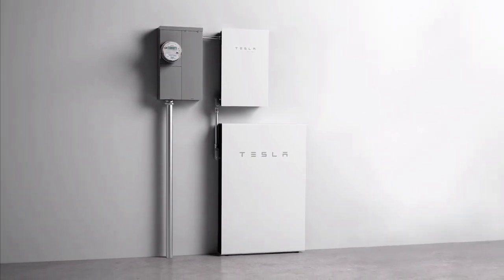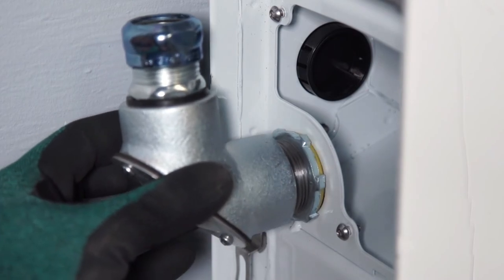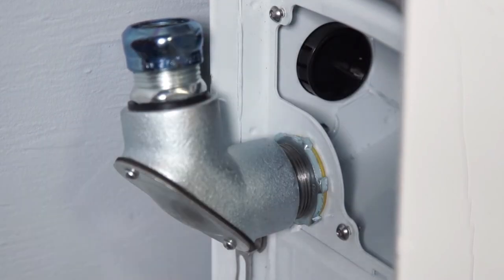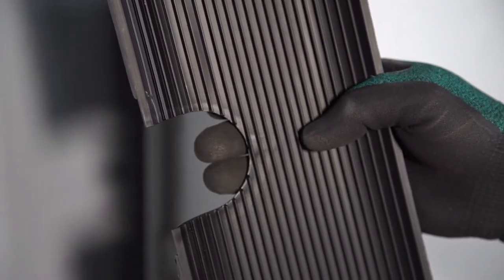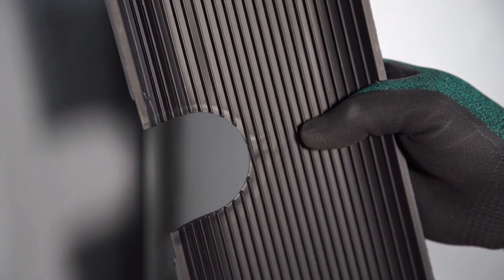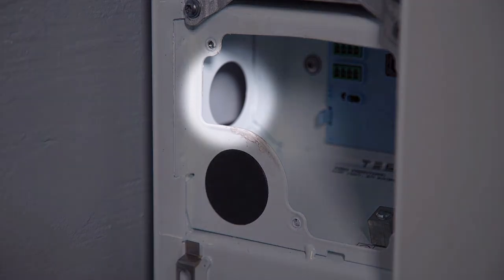When preparing for the installation, take your time to plan out a short and efficient conduit run. A typical installation uses one-inch conduit with a conduit body connected to the inlet on the left side of Powerwall 2. If the conduit run will enter the unit from the side, slide the conduit entry door out of the slot in the cover to remove it.